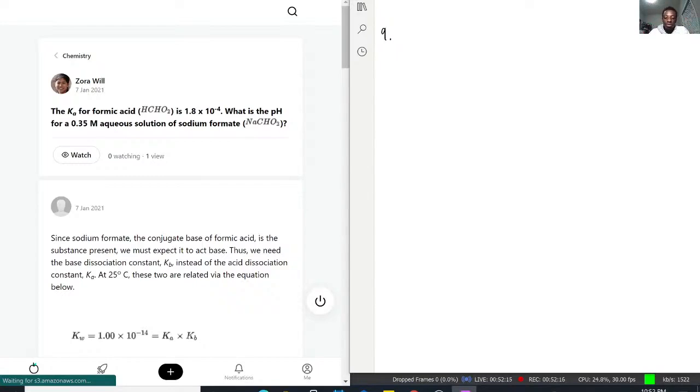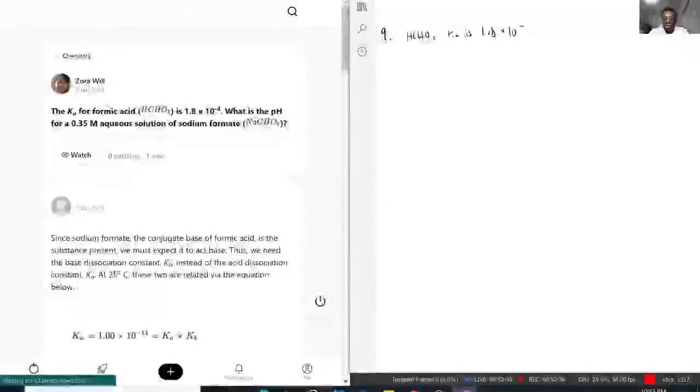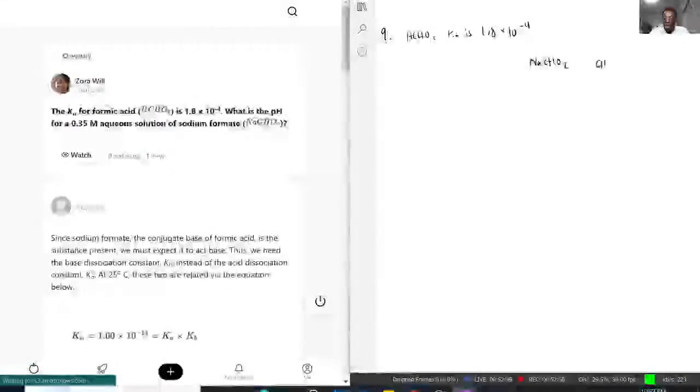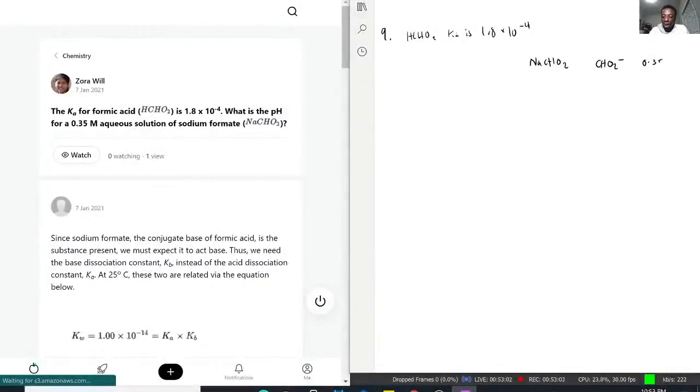We first need to write a shorthand of what the question is asking. So we have HCHO2, Ka is 1.8 times 10 to negative 4. And then we want to know the pH for the base, which is NaCHO2. We can write it as CHO2 minus. This is what's going to happen when it dissociates in water - it's going to separate between sodium and that CHO2. And we want to know 0.35 moles of this.